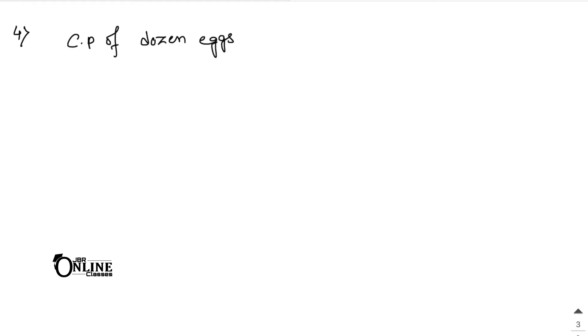Sum number four: Rashida bought 25 dozen eggs at the rate of rupees 9.60 per dozen. 30 eggs were broken in the transaction and she sold the remaining eggs at 1 rupee each. Find her gain or loss percentage. CP of one dozen eggs equals 9.60. One dozen means 12 eggs.